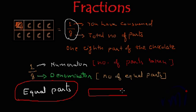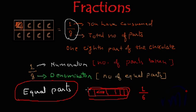Suppose you have a chocolate and certain unequal partitions are made. You will prefer the bigger part, but this cannot be called 1 out of 6. Even though the chocolate is divided into 6 parts, since all 6 parts are not equal, that particular part cannot be called one-sixth of the whole. So when you want to represent something in terms of fractions, you have to divide it into equal parts. All parts should be equal — only then does the fraction have validity. The most important thing in fractions is that the division must be equal.